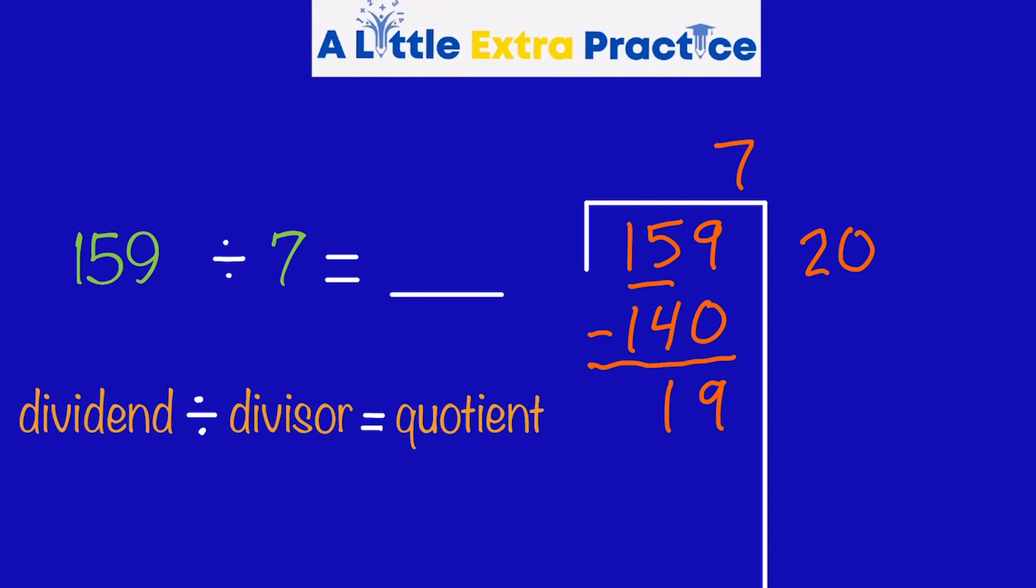7 times what number is almost 19? 7 times 2, again, is 14. Subtract. And I have a 5. Now, my divisor is 7. My remainder is 5 because it is smaller than my divisor. So what I'll do is I'll take these 20 and 2, and then add my remainder. So, my quotient is 22 remainder 5.